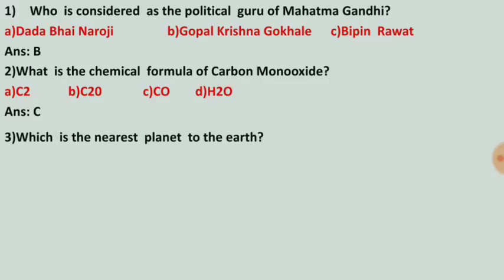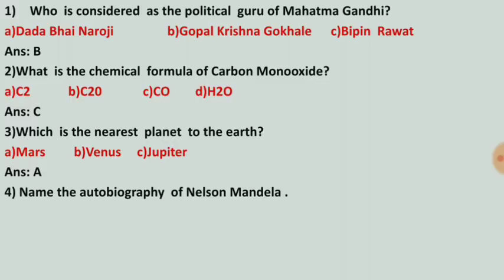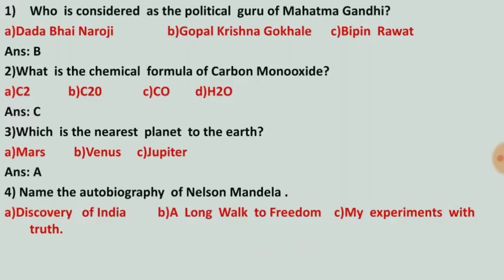CO is the chemical formula of carbon monoxide. Which is the nearest planet to the Earth? Options are Mars, Venus, and Jupiter. The correct answer is Mars — Mars is the nearest planet. Name the autobiography of Nelson Mandela. Options are Discovery of India, A Long Walk to Freedom, and My Experiments with Truth. The correct answer is number B, A Long Walk to Freedom.